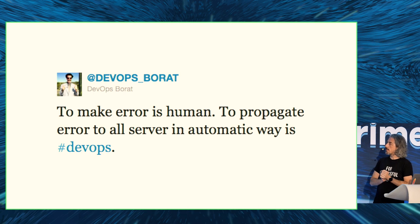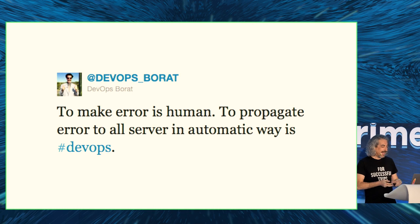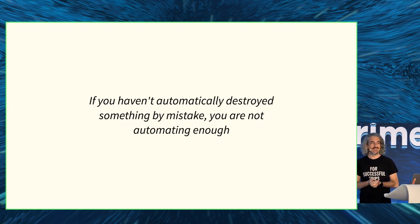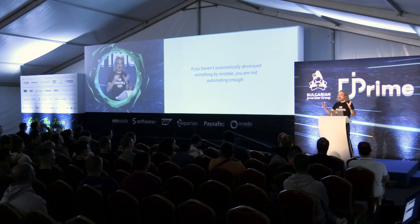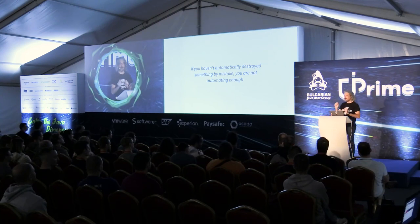Here's a quote I use: 'To make error is human; to propagate error to all serving in automatic ways, that's DevOps.' And my own version: 'If you haven't automatically destroyed something by mistake, you are not automating enough.' Who has broken something in an automatic way? For example, you deploy something that breaks, you have everything so automated — you commit something, it goes to production, and it breaks everything. At that point you realize automation is good, but you need this last small bit to make sure you don't break everybody.